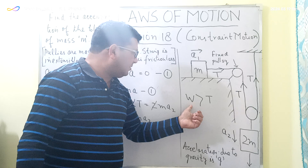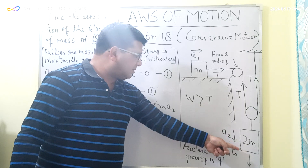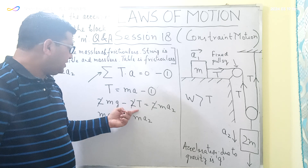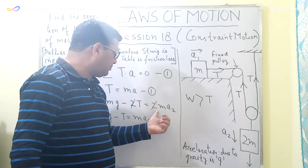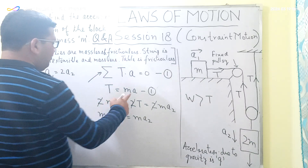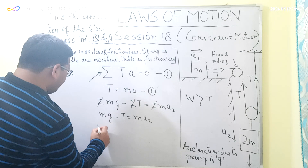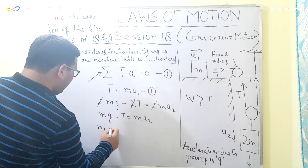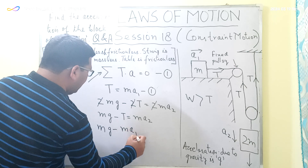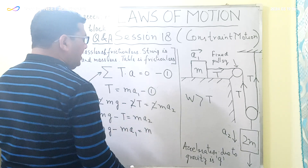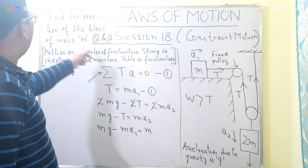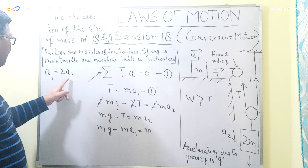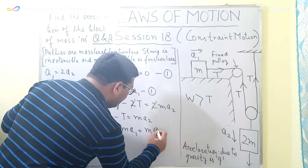The block moves downward only when weight exceeds the total tension acting on it. Substituting T = M × A1 from the first equation into MG − T = M × A2 gives MG − M × A1 = M × A2. Since A1 = 2 × A2, we have A2 = A1 / 2. Substituting this in gives MG − M × A1 = M × (A1 / 2).